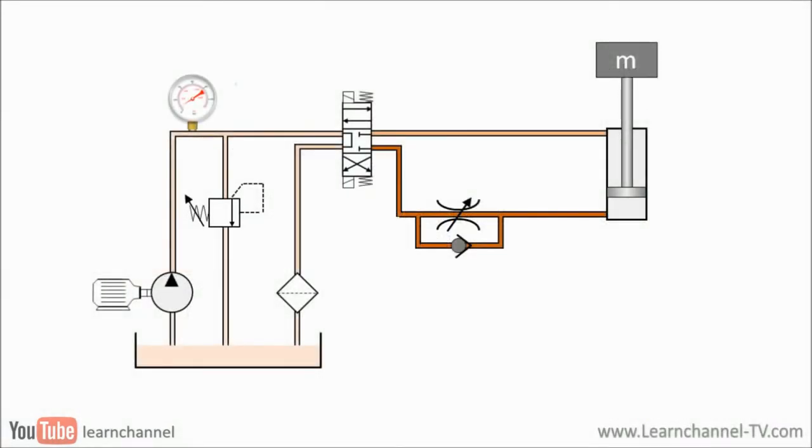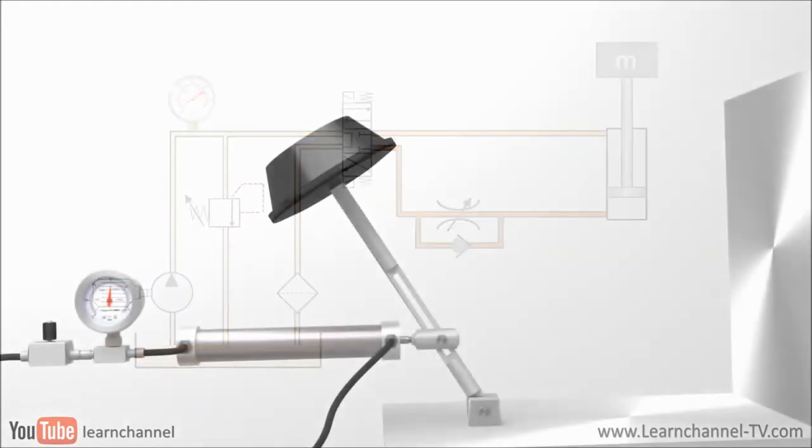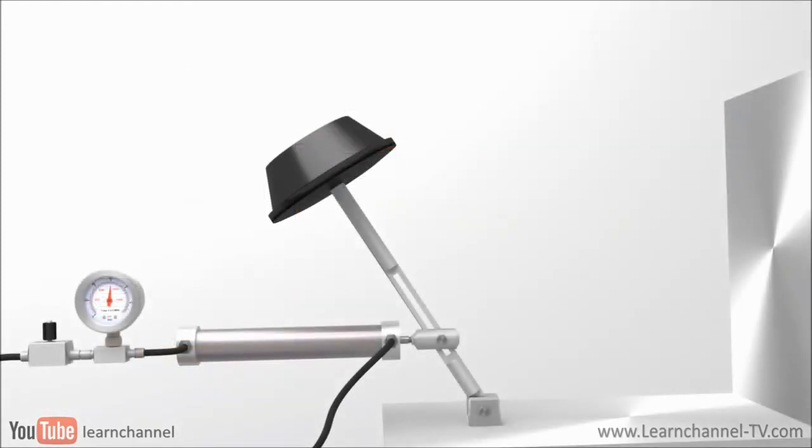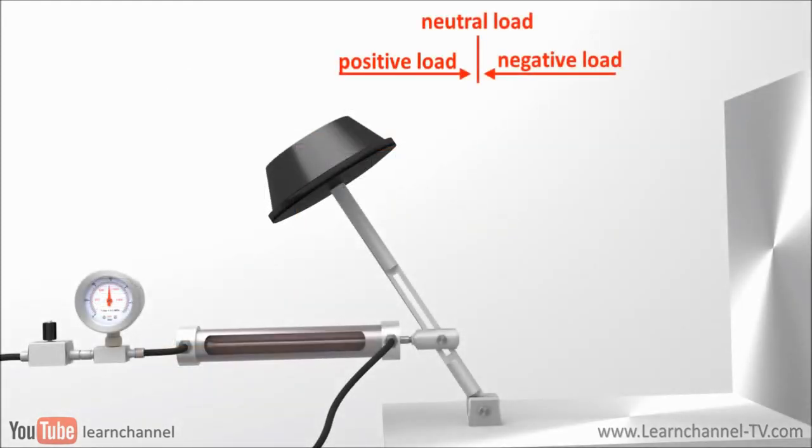But how are these flow control valves installed? One method is called meter in. Here, you control the rate of flow to the actuator. Here you see how the flow control valve restricts the volume flow when the cylinder extends.